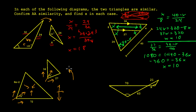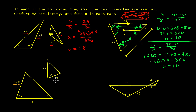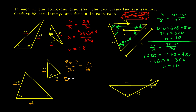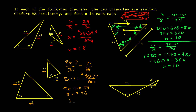Bringing back the tick marks: in the big triangle, across from the tick mark is 8X minus 2, and across from the one tick mark in the small triangle is 27. Between the two marks on the big triangle is 72, and between the two marks on the small triangle is 36. So the proportion is 8X minus 2 over 27 equals 72 over 36. Reducing 72 over 36 gives 2, and 2 times 27 is 54. So 8X minus 2 equals 54, giving 8X equals 56, and X equals 7.